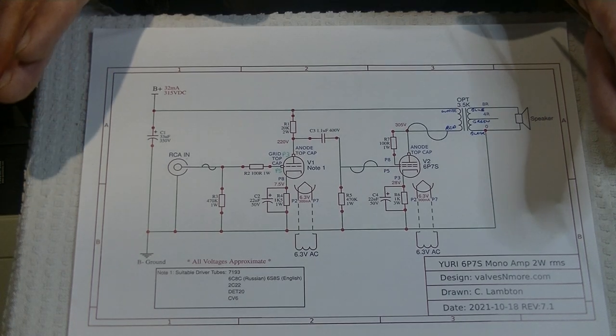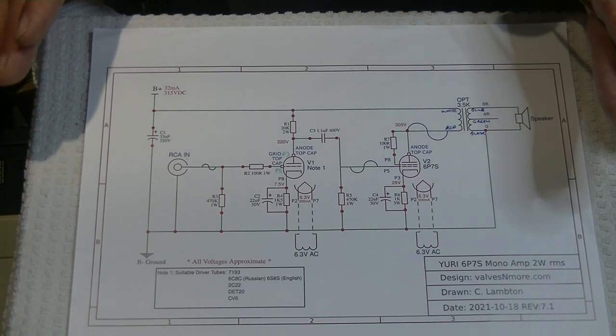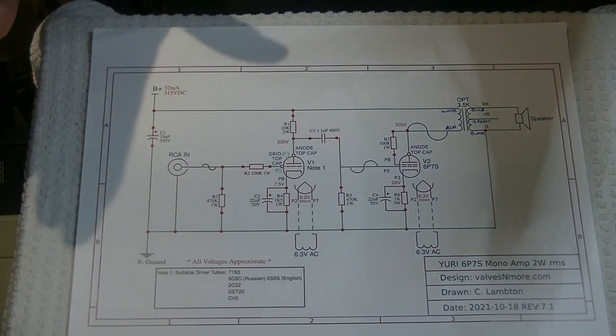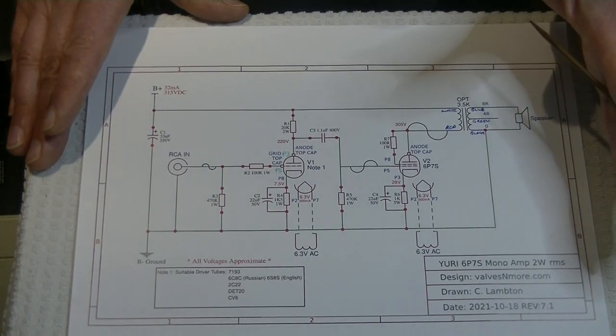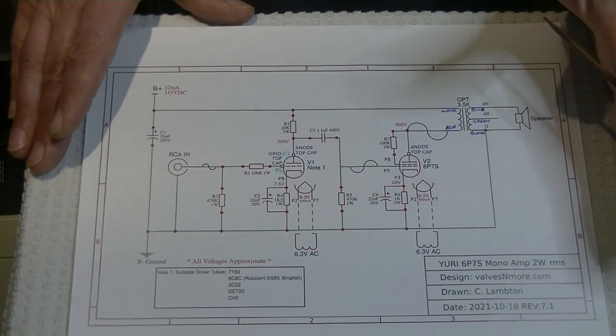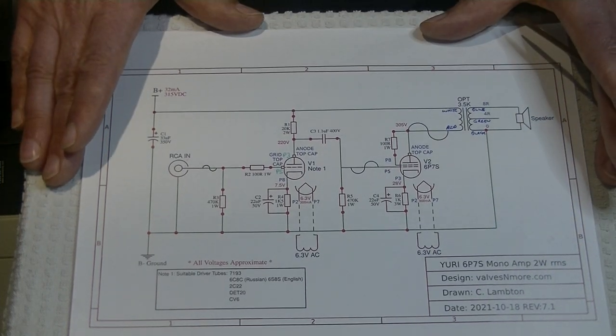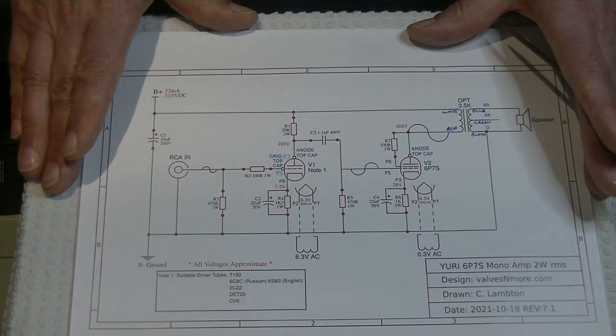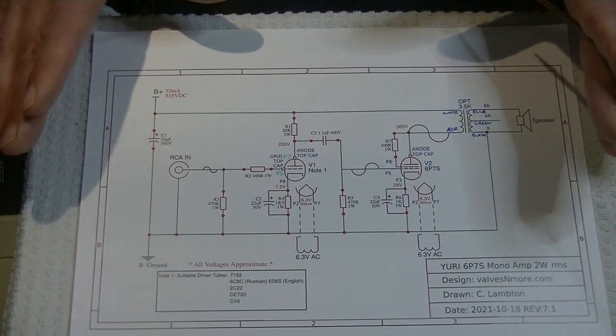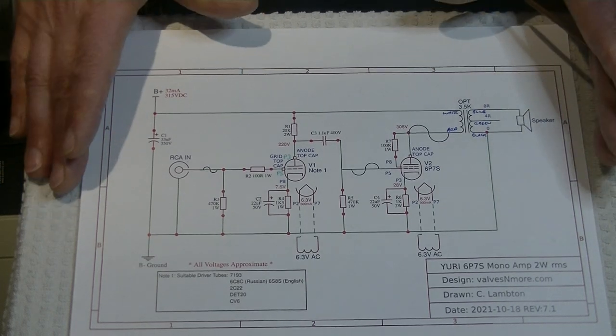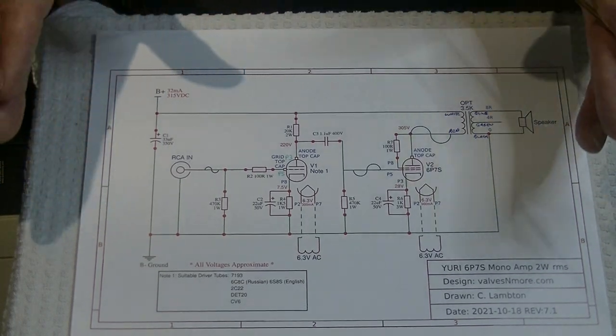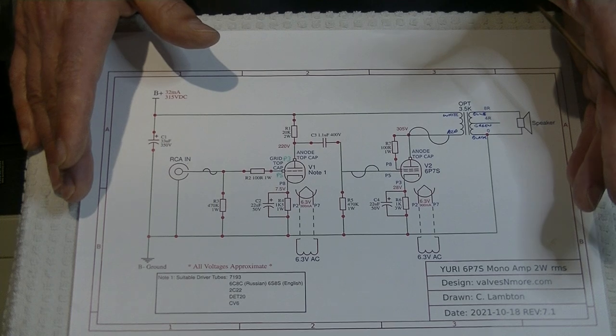Now why are we getting that clarity and that immediacy? Why are the mid-range vocals so absolutely amazing and stunning? What's going on with Class A that the more common Class AB doesn't do?